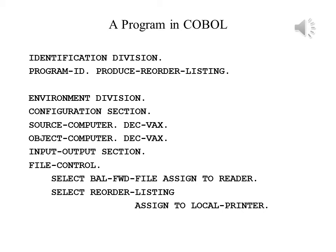COBOL is also line-oriented and uses two margins. The A margin begins from columns 8 to 11, within which the names of various divisions, sections, and paragraphs must begin. The B margin begins on or after column 12, where COBOL statements can appear. COBOL programs consist of four divisions: the identification division, the environment division, the data division, and the procedure division.